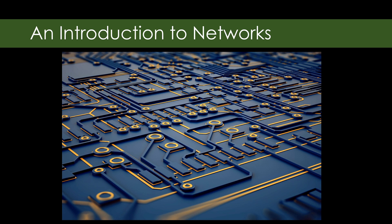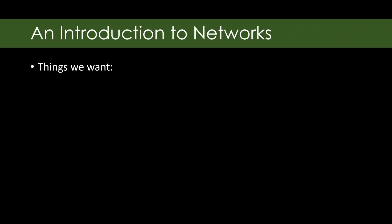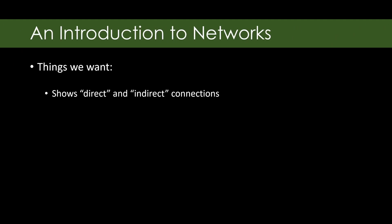And we'd like to have a nice mathematical picture of what a network should be. So what do we want? We want to show direct and indirect connections. It's important to be able to say that you can get from one place to another without going through somewhere else, and it's also important to describe going from one place to another through somewhere else.